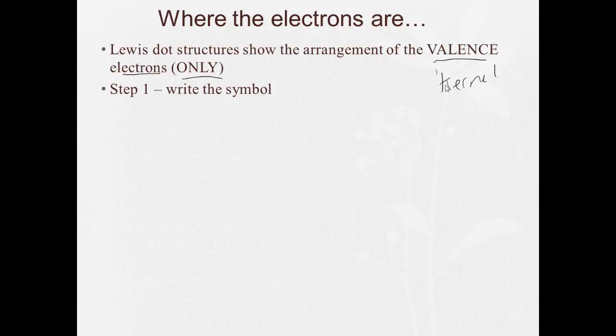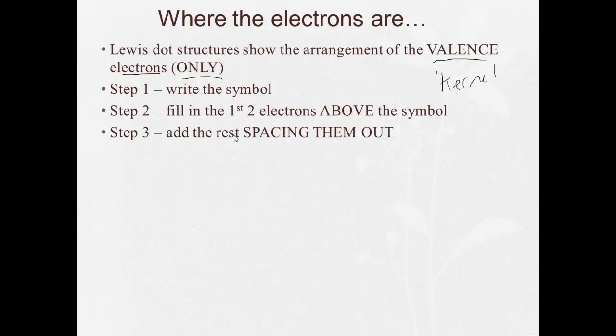When we're going to draw a Lewis dot structure, step 1 is you write the symbol for the element. Step 2, figure out how many valence electrons there are. The first two go above the symbol, and then we add the rest, spacing them out. Very simple.